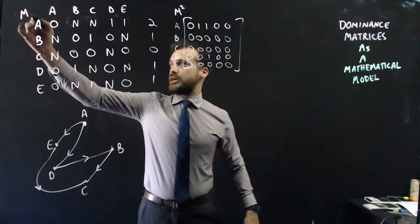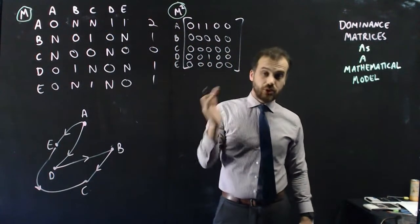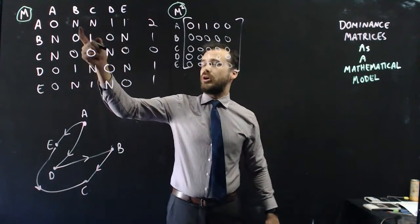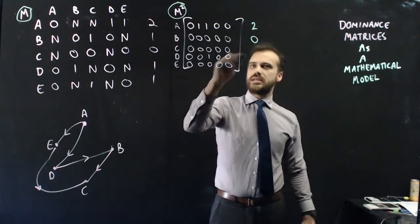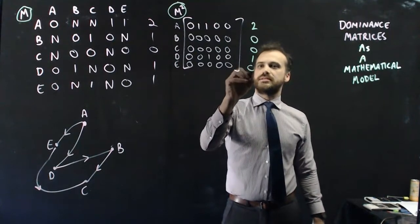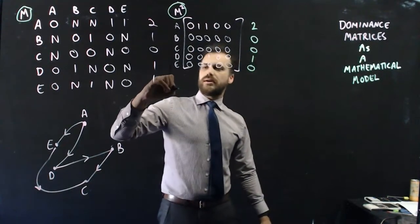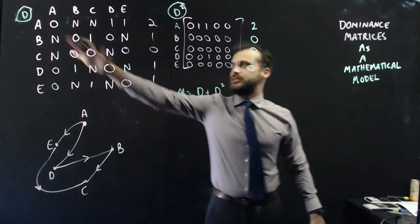So we could take this matrix and square it. All right, I've done it. I've taken matrix M and then I've squared it. So this is matrix M squared. Now when I do that, A gets some second-hand wins on B and C. So there's two points there. B gets no second-hand wins. C gets no second-hand wins. D gets a second-hand win, and E gets second-hand wins.